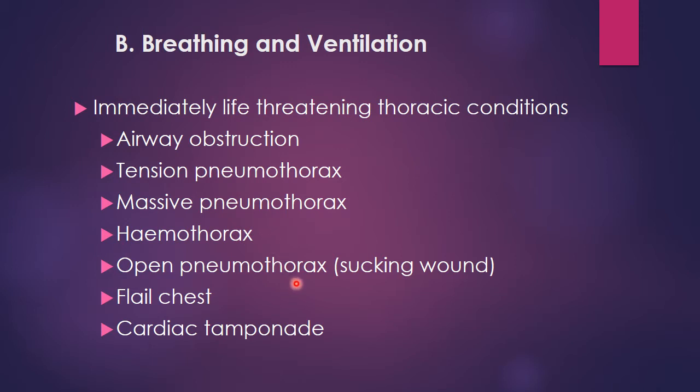Open pneumothorax occurs when a gunshot entry or exit wound in the chest is so large that the pleural space communicates directly with the environment, with insufficient tissue to cover the wound. Air easily moves in and out, inducing one atmospheric positive pressure on the lung — such lungs also collapse because they require negative pressure in the pleural space to expand.